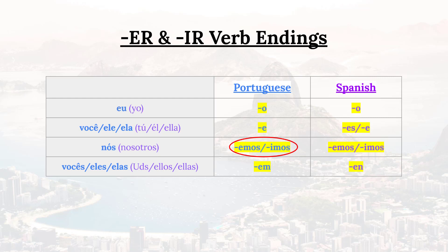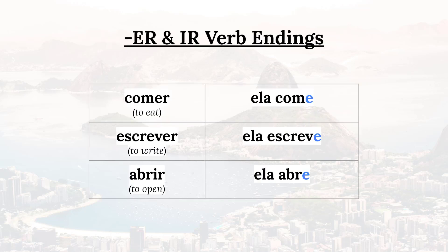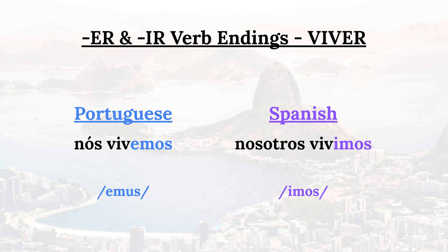Now the endings for ER and IR verbs are the same, except in the 'nós' form where ER verbs take the '-emos' ending and IR verbs take the '-imos' ending. Taking the verb 'viver' — to live — as an example, the verb ending in the first person singular is the same as in AR verbs, so 'I live' is 'eu vivo,' the O again pronounced like a 'u.' 'She lives' is 'ela vive' — notice how the E is pronounced differently from Spanish: 'ella vive' in Spanish versus 'ela vive' in Portuguese, so the E sounds like an 'i.' For example, 'she eats' is 'ela come,' 'she writes' is 'ela escreve,' 'she opens' is 'ela abre.'